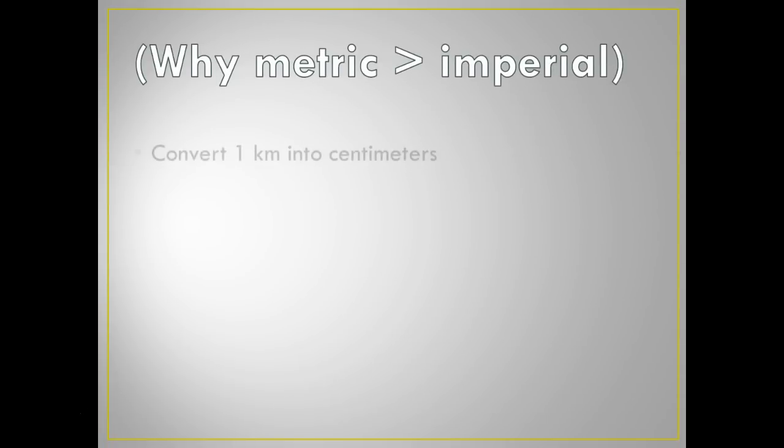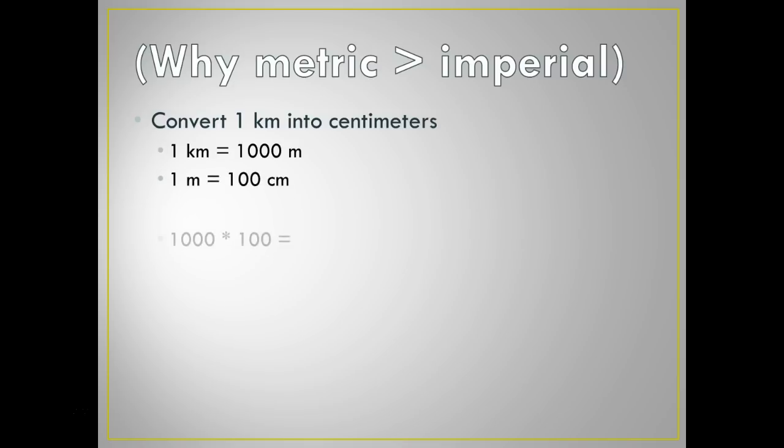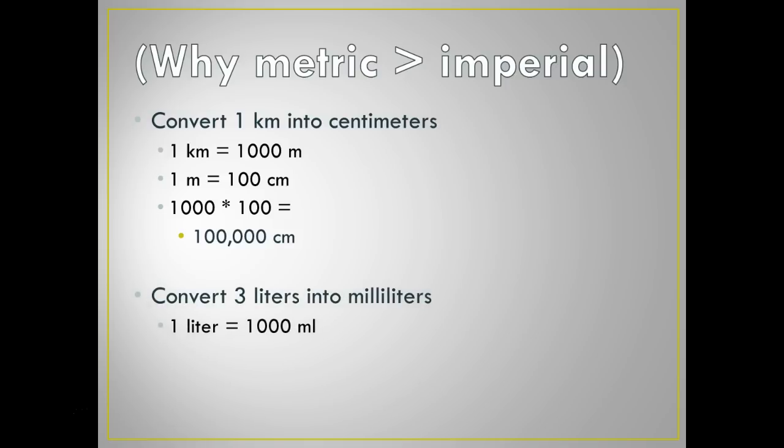So, let's talk about why metric is better. If you were to convert one kilometer into centimeters, one kilometer is a thousand meters, one meter is a hundred centimeters. A thousand times a hundred, well, count the zeros. I got five. One with five zeros after it is a hundred thousand centimeters. That's it. If you were to convert three liters into milliliters, all you need to know is one liter is a thousand mils times three, 3,000 milliliters. Super redonculously easy.